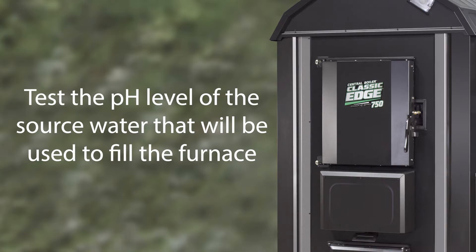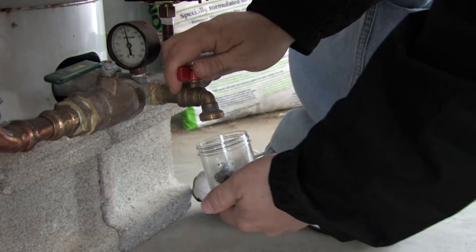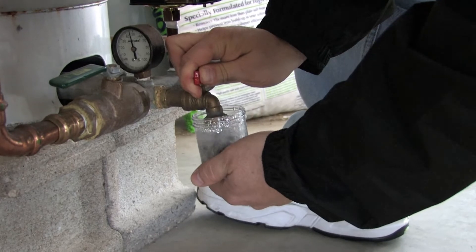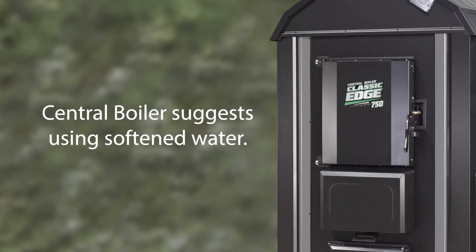Step 1. Test the pH level of the source water that will be used to fill the furnace. Before filling the furnace with water, collect a small sample of water to be used in a clean container. Central boiler suggests softened water.